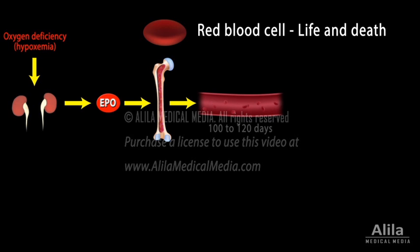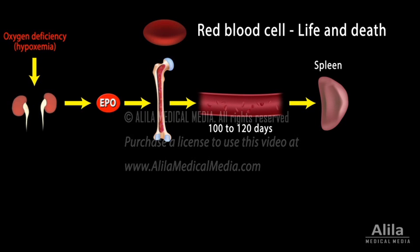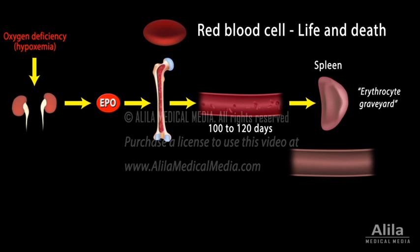Red cells live about 100 to 120 days. With age, the cells lose their elasticity. Without protein synthesis, they are unable to repair themselves. Worn-out red cells are detected in the spleen, which serves as a quality control center. The spleen has a network of very narrow channels which test the agility of erythrocytes.